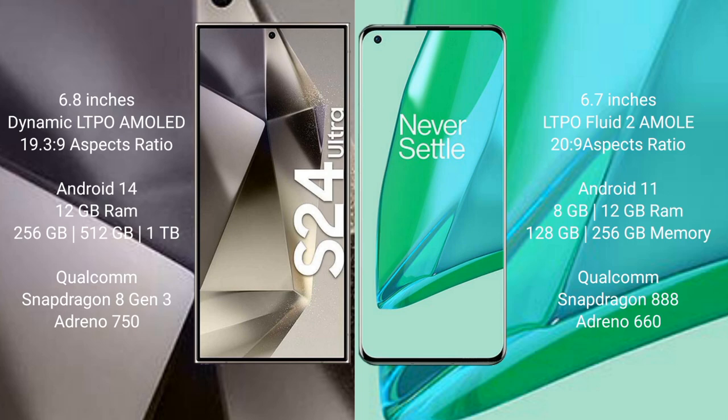Samsung Galaxy S24 Ultra has a Qualcomm Snapdragon 8 Gen 3 processor with Adreno 750 GPU. OnePlus 9 Pro comes with 8GB or 12GB RAM and 128GB, 256GB, or 512GB internal storage, also with a Qualcomm Snapdragon 8 Gen 3 processor and Adreno 750 GPU.